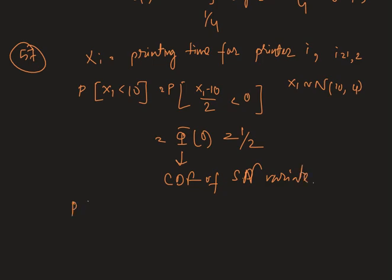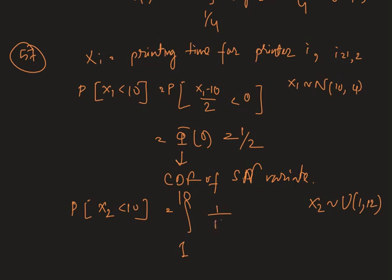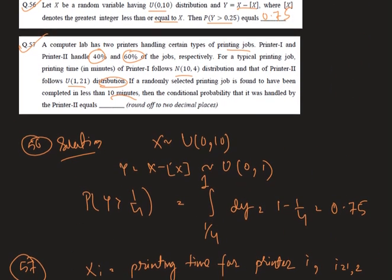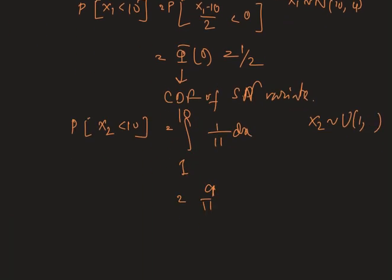Now we need to find P(X2 < 10), where X2 follows Uniform(1,21). This gives the integral from 1 to 10 of 1/(21-1) dx, that is 1/20 dx. Hence we get 9/20 as the required probability.